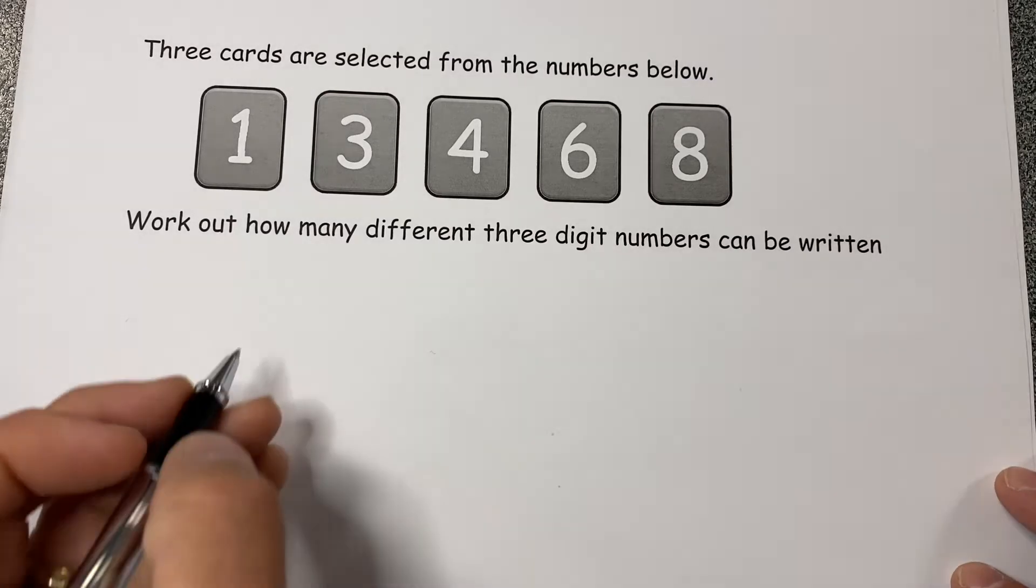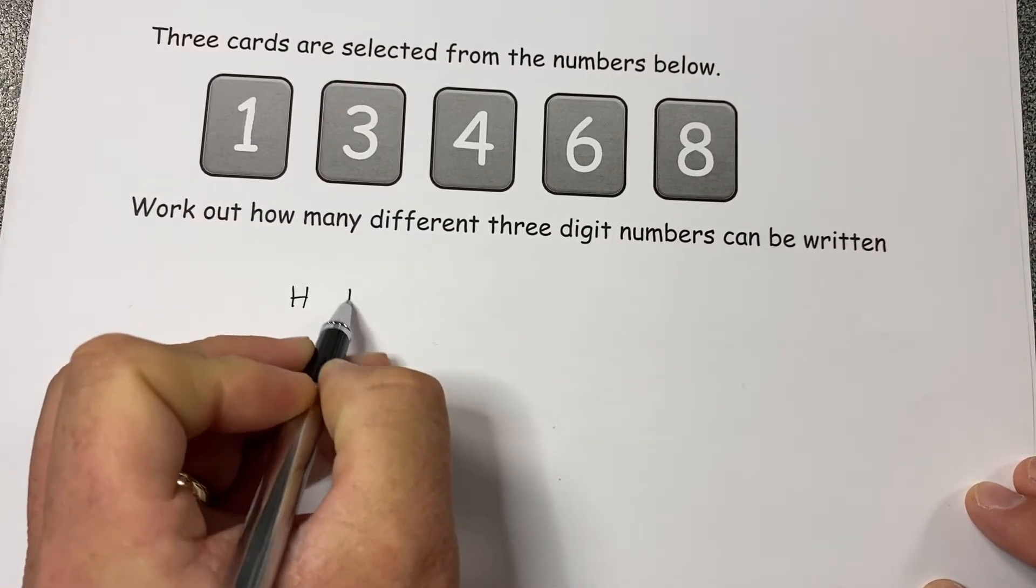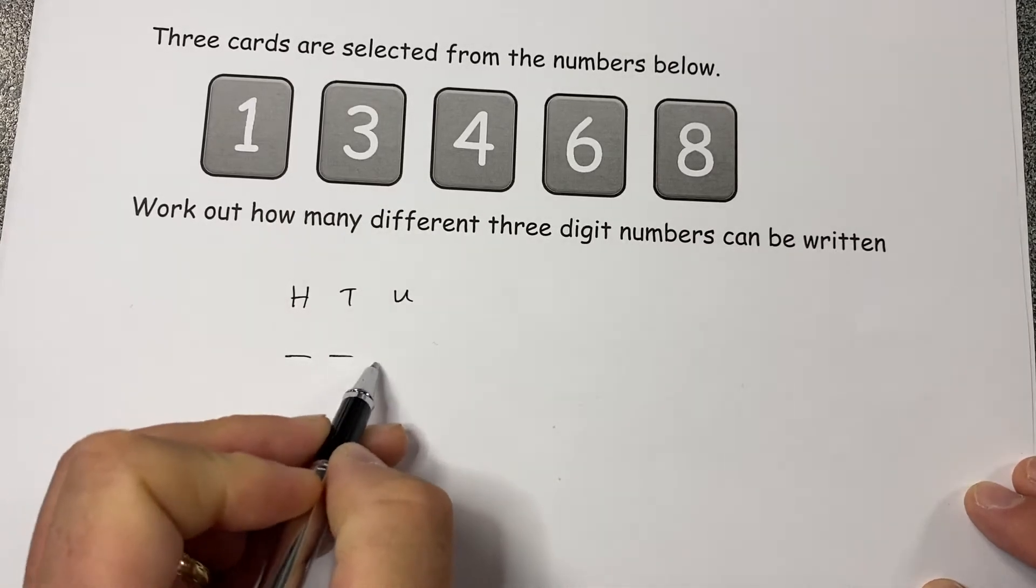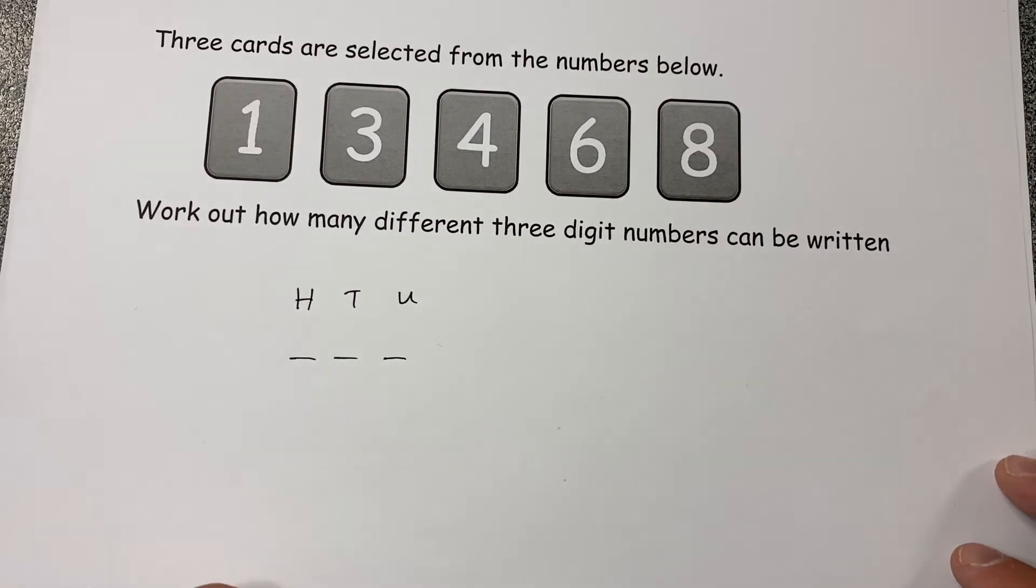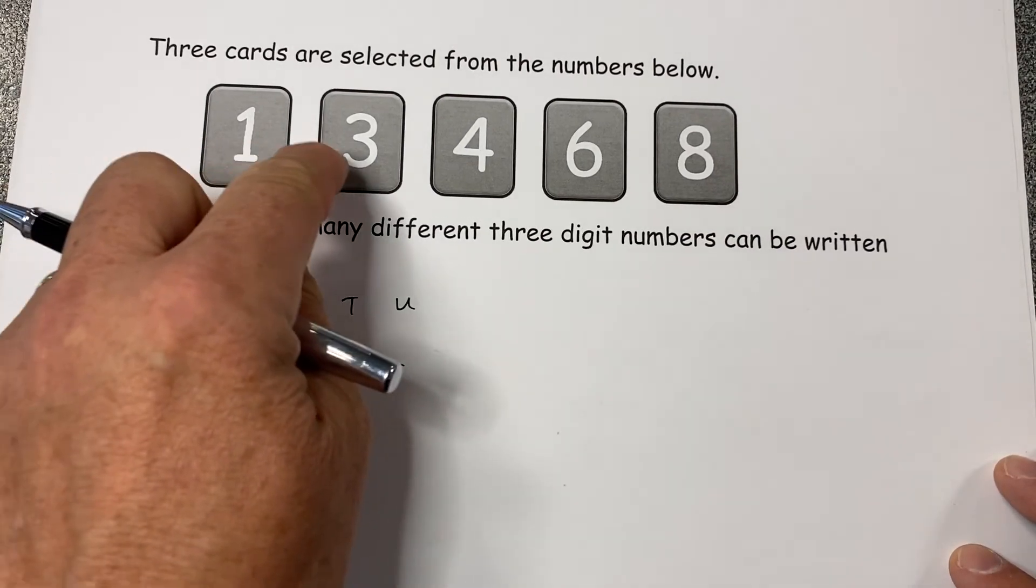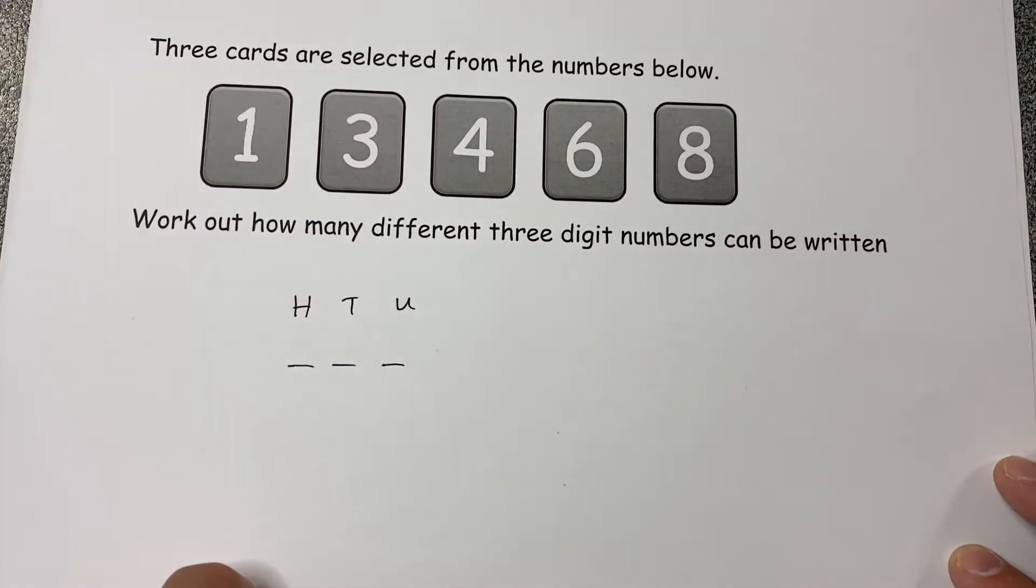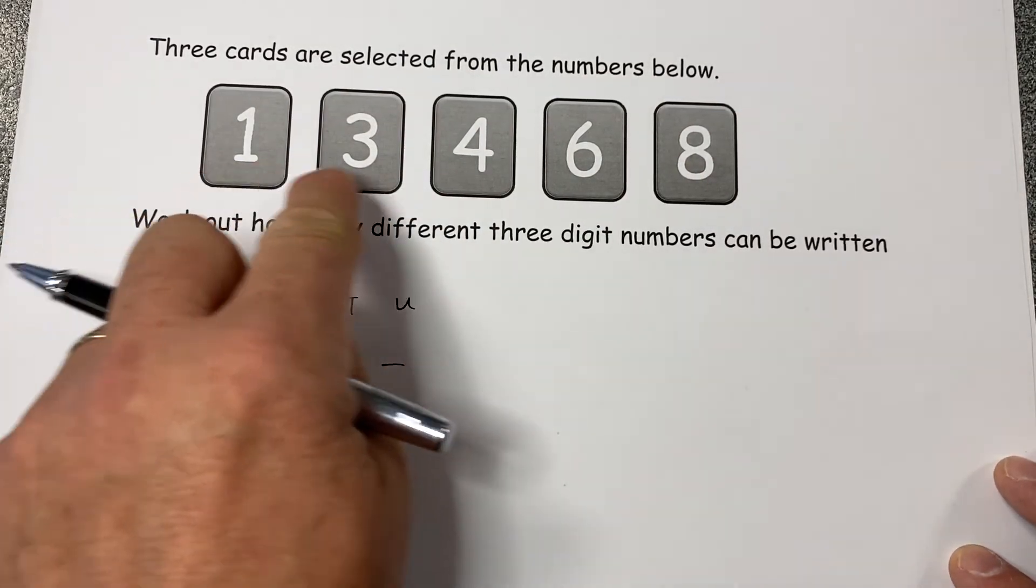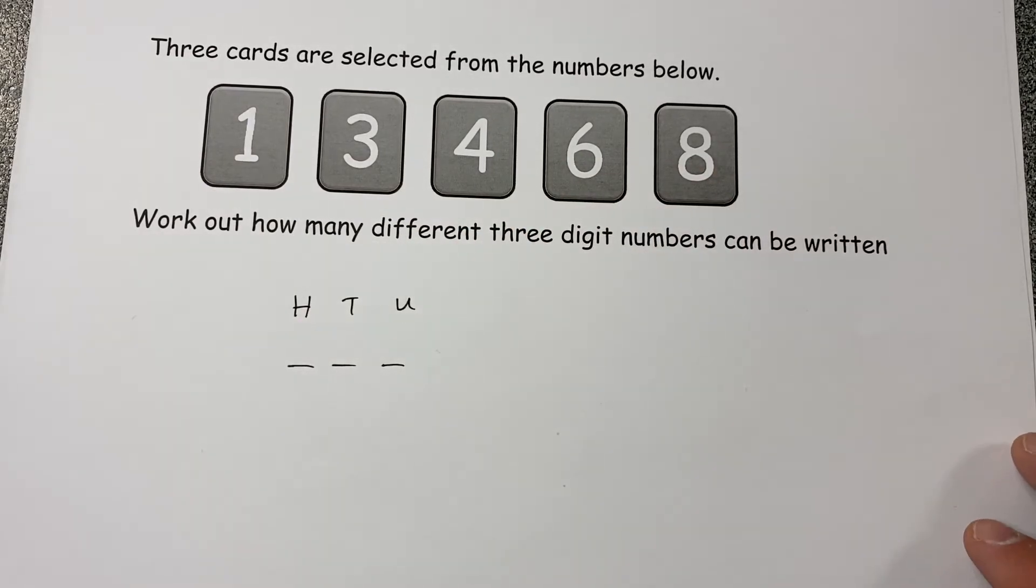Now, if I'm looking at a three digit number, we've got hundreds, tens, and units. So three selected. Now we could write them all down, so we could try 134, 136, 138, then 143, 146, 148, and we could carry on like that. But we would find that we're spending a lot of time writing them all down when all we want is how many are there.